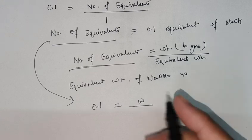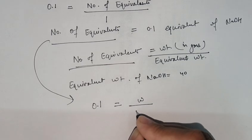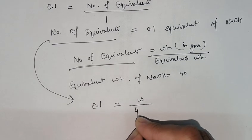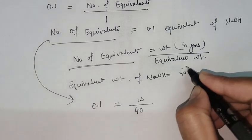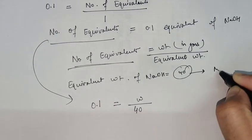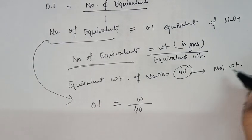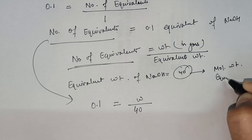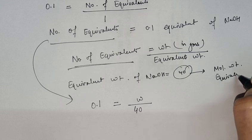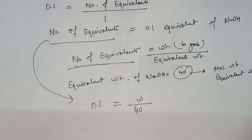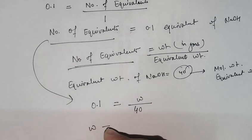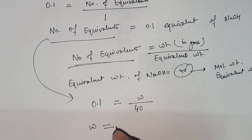Weight, let's suppose it is W, which we need to find out. We have the equivalent weight of 40. The molecular weight and equivalent weight of NaOH are the same.